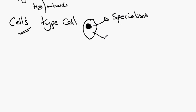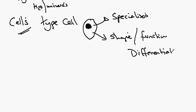And it does that through switching on genes which cause the change in the shape, giving the cell a particular function. And that process is called differentiation. So cells differentiate to different types of cell.